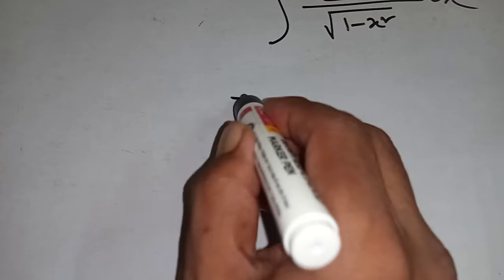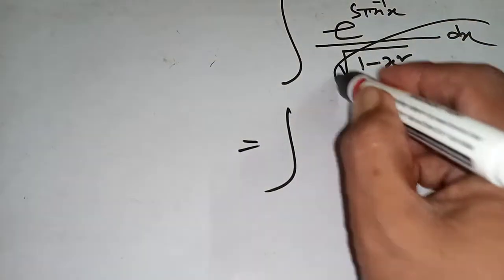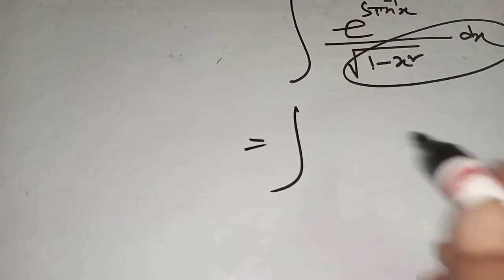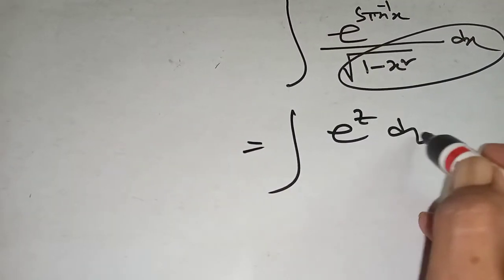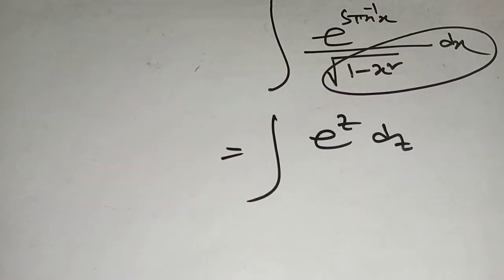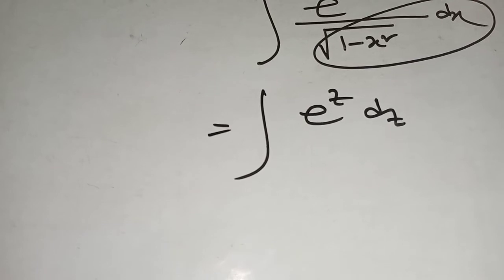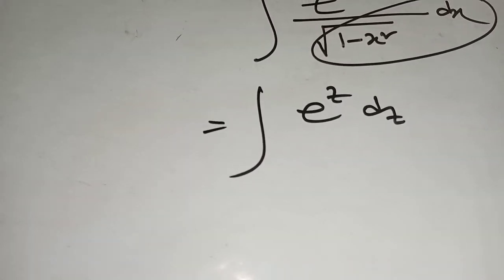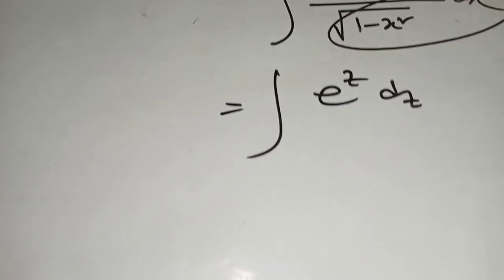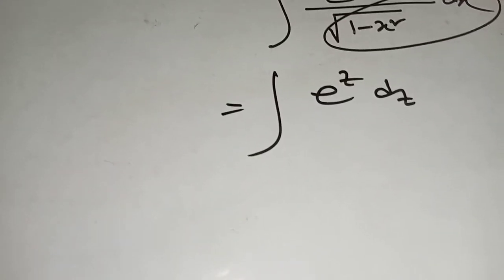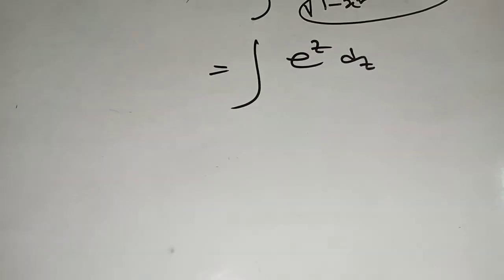Now, put this equal to dz. We have e to the power z, dz. So e to the power z means sine inverse x equals z. Hence, e to the power z and dx by root over 1 minus x square equal to dz.